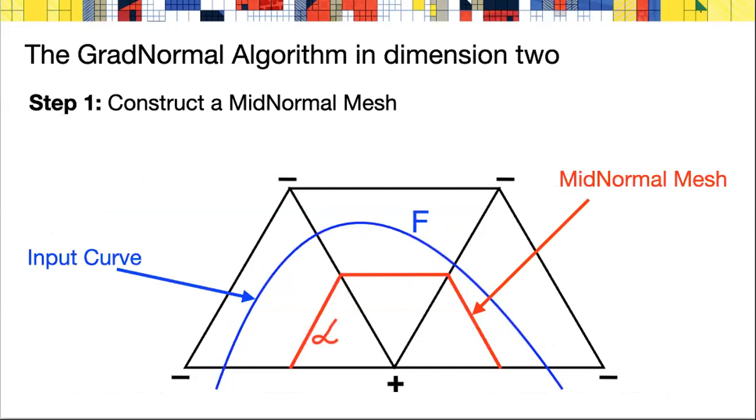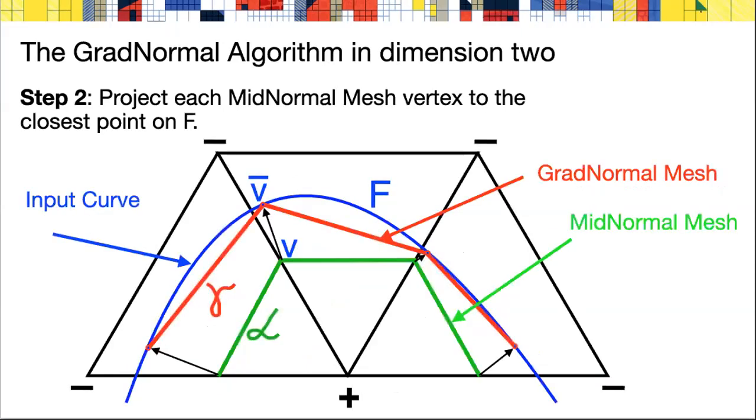The GradNormal algorithm will construct an approximating mesh to the curve F in three steps. In the first step, rather than constructing a polygon that has the vertices lying on F, we'll construct a polygon lying on midpoints of triangles and separating vertices of edges in the same way that F does. We call this the midnormal mesh because its vertices are located in the midpoints of the edges. As a second step, we'll move these vertices to F using a closest point projection. We'll call this new mesh the GradNormal mesh.